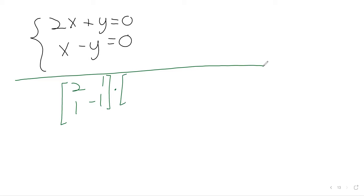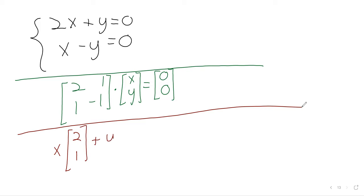If you have a homogeneous system of linear equations, you could rewrite that as a matrix vector equation where you have the zero vector, the vector of all zeros on the right-hand side, or you could write it as a vector equation.